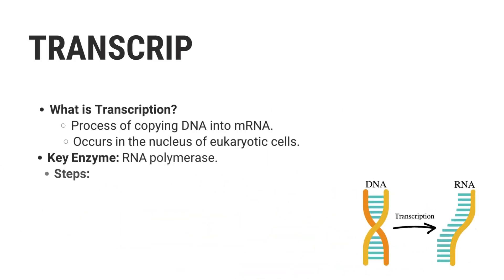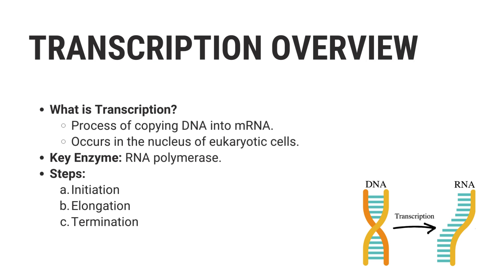Transcription is the first step in gene expression. During transcription, a segment of DNA is copied into mRNA by the enzyme RNA polymerase. This process takes place in the nucleus of eukaryotic cells. The key steps are initiation, elongation, and termination, which collectively ensure that the genetic code is accurately transferred to mRNA, ready for the next step in protein synthesis.